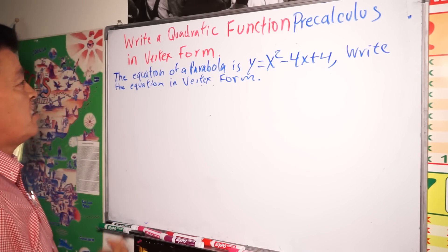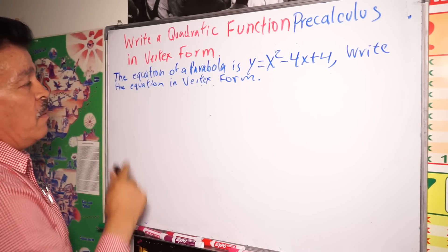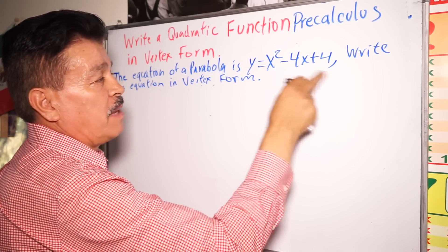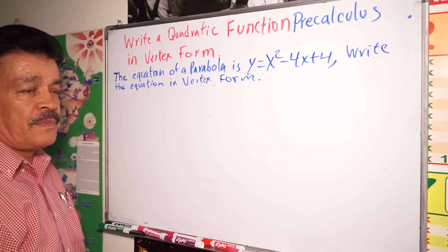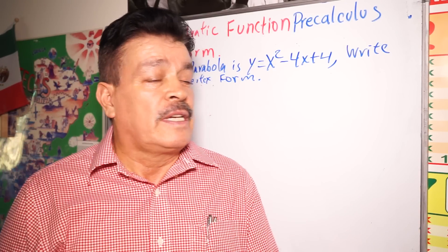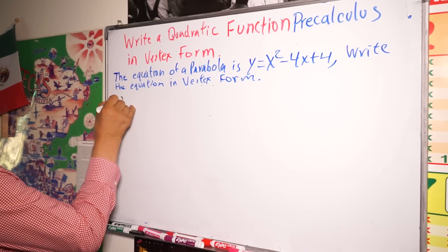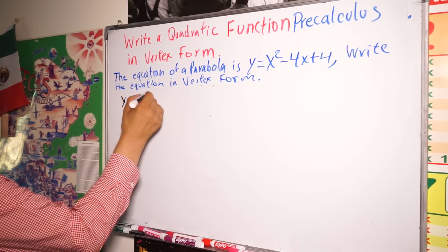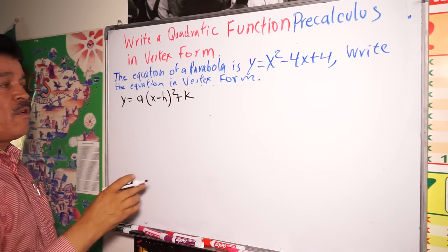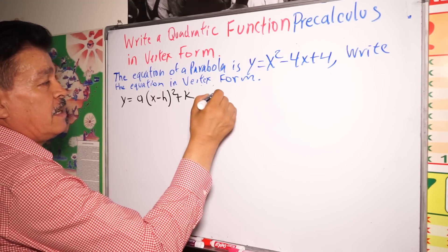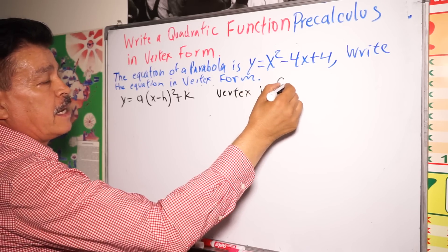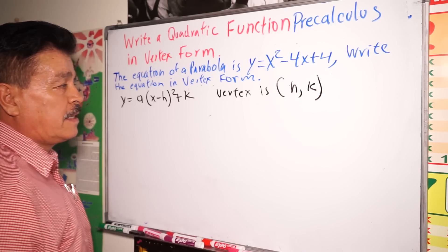What I mean is a quadratic function in vertex form. The equation of the parabola is y equals x to the second power minus 4x plus 4. The vertex form of a parabola that opens up or opens down is y equals a times (x minus h) to the second power plus k. This is the vertex form. The vertex is (h, k).